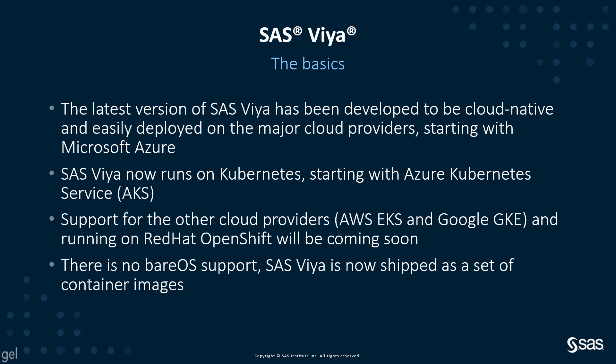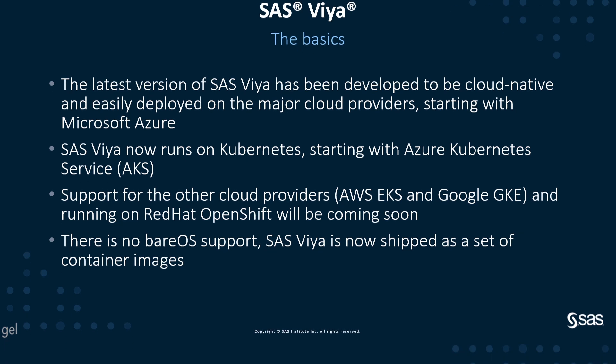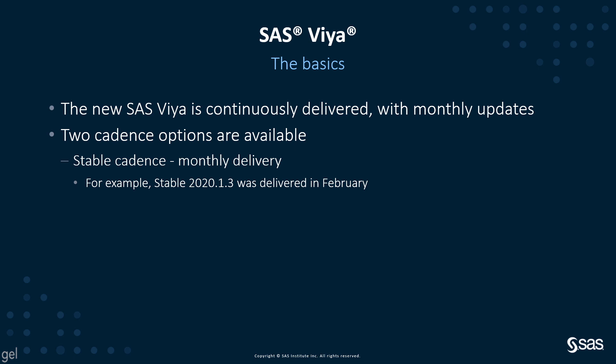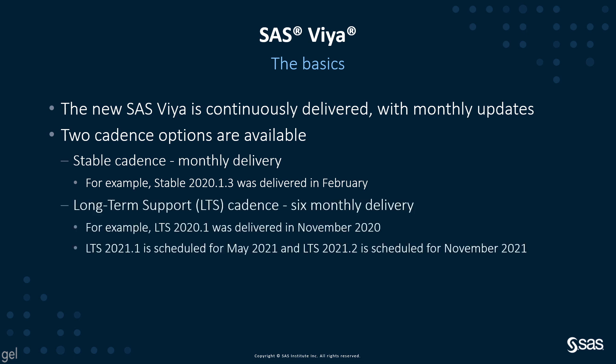SAS Viya is now shipped as a set of container images. The new SAS Viya is continuously delivered with monthly updates. Two cadence options are available. There is the stable cadence, which delivers monthly. For example, stable 2020.1.3 was delivered in February, a few days ago. And the long-term support, or LTS cadence, is delivered six monthly. For example, the LTS version 2020.1 was delivered in November 2020.